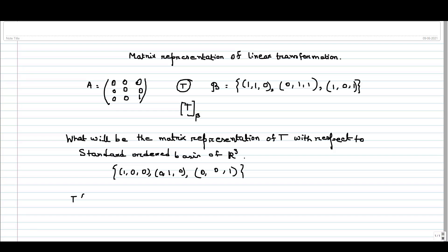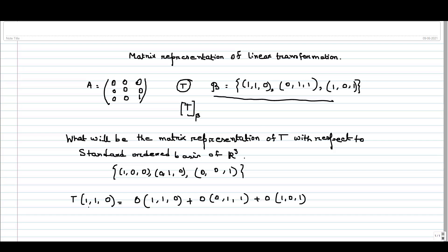Observe that T(1,1,0) is nothing but 0·(1,1,0) + 0·(0,1,1) + 0·(1,0,1). So with respect to ordered basis beta, if I express the first vector T(1,1,0), I am getting the coefficients as 0, 0, 0 — and that's what appears in the first column. Since the first column is (0,0,0), the image of the first basis vector (1,1,0) should be 0. That is what the matrix representation tells us.